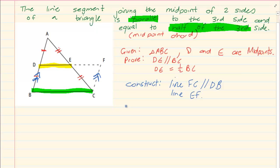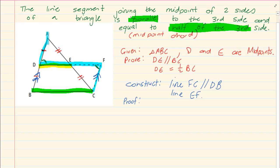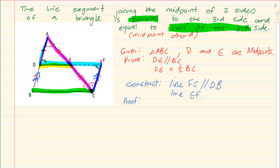Now let us start proving it. If you look at triangle ADE and triangle EFC — if we made FC parallel to DB, then angle F is equal to angle D because it forms a Z. And there is also another Z, so C1 is equal to angle A. So the two triangles we are working with are triangle ADE and triangle CFE.